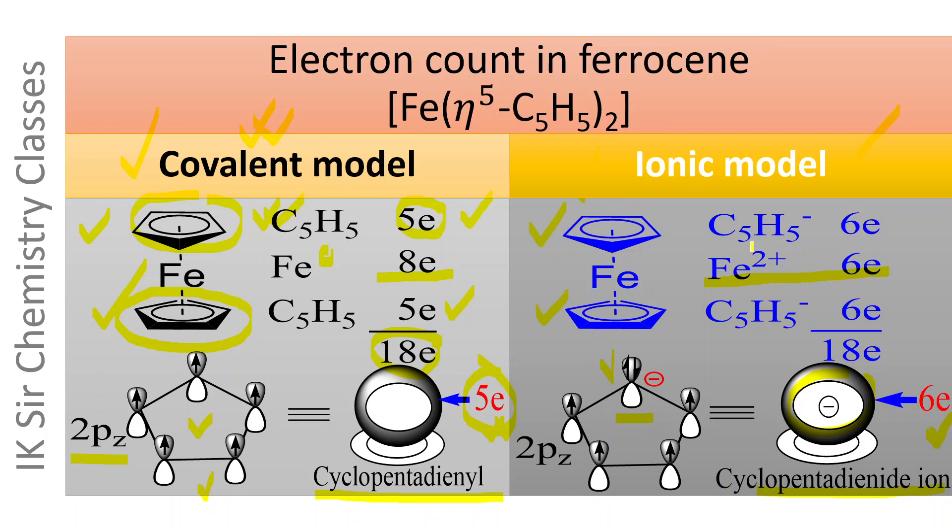Fe2+ ion now has only six valence electrons, 3d6. C5H5 minus ion contributes six electrons to the electron count of iron, while this C5H5 minus ion also contributes six electrons. Therefore overall electron count of iron in ferrocene is 18. Thus we see that both covalent model and ionic model for electron count in organometallic compounds are quite easy and they give rise to the same overall electron count.